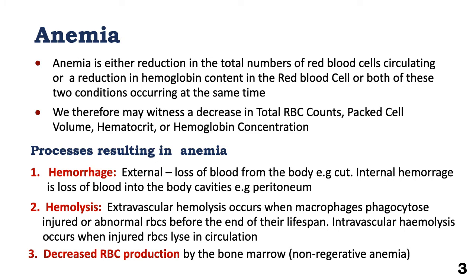Processes that result in anemia include hemorrhage. Hemorrhage may be external, where you have a cut from your body and you lose blood that you can actually visualize. It can be internal, where there's loss of blood into the body cavities, such as the peritoneum.